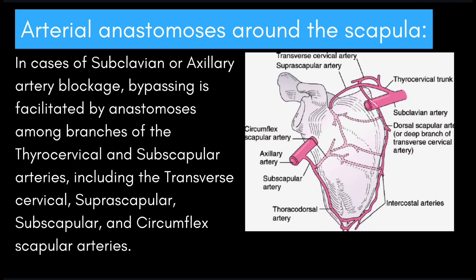Next I'd like to talk about arterial anastomosis around the scapula. In cases of subclavian or axillary artery blockage, bypassing is facilitated by anastomosis among branches of the thyrocervical and subscapular arteries, including the transverse cervical, suprascapular, subscapular, and circumflex scapular arteries. I've illustrated important arteries you need to know on the picture to the right. We'll be covering this in more detail in the MSK high yield review series, but as a broad point this should be enough to get you maybe 80% of the points if you can draw out this diagram from memory.